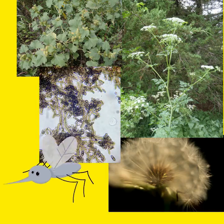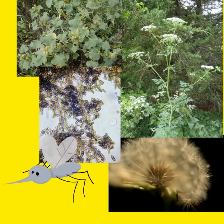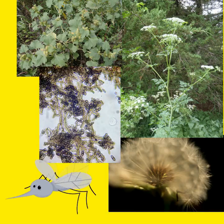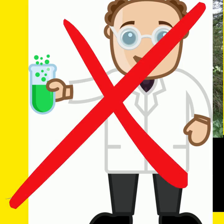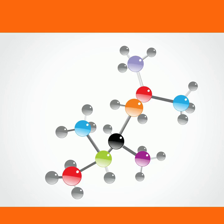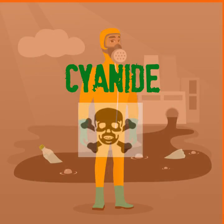The important thing to note is that a pesticide is not necessarily a man-made chemical. Many of the chemical compounds used in pest control are actually created from naturally occurring compounds such as cyanide.